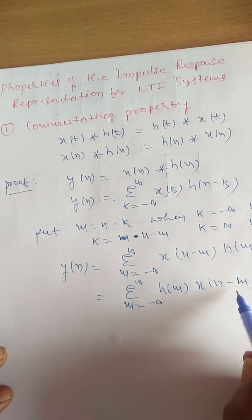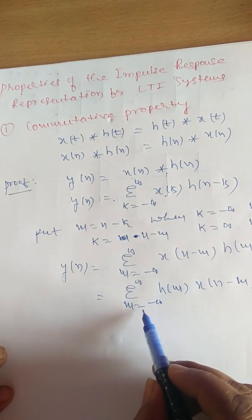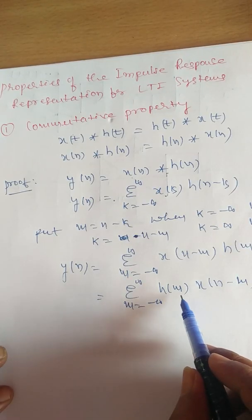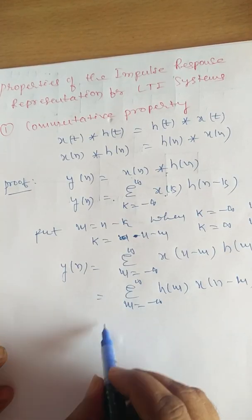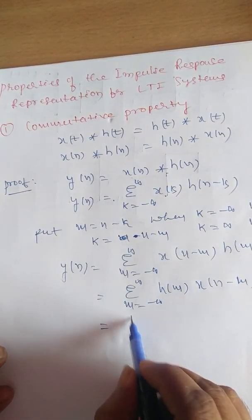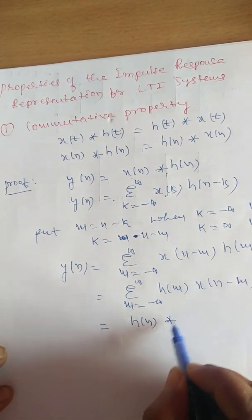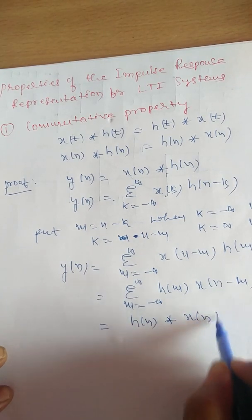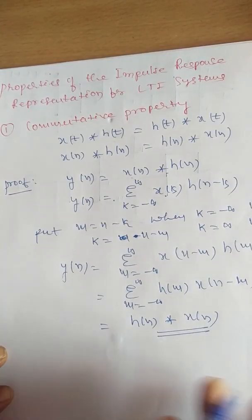Here, if we replace m by k, it will be the same as summation from k equals minus infinity to plus infinity of h(k) into x(n minus k). So this is the same as h(n) linearly convolved with x(n), and thus the property is proved.